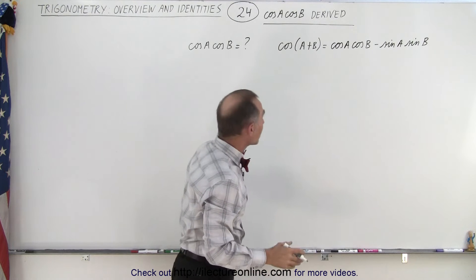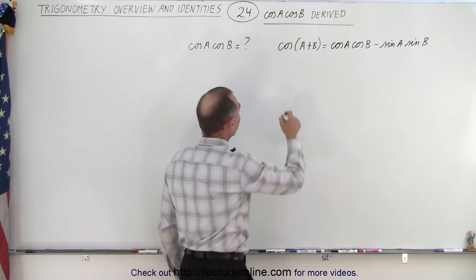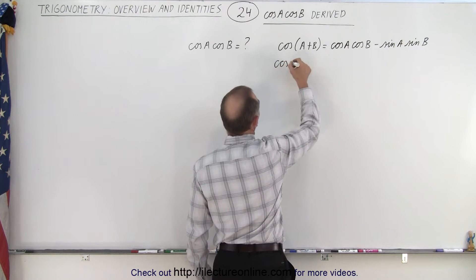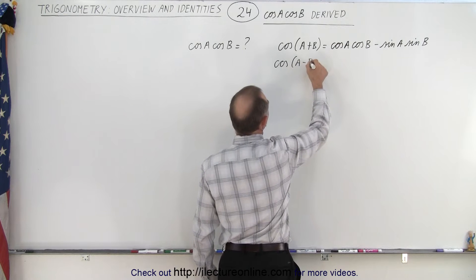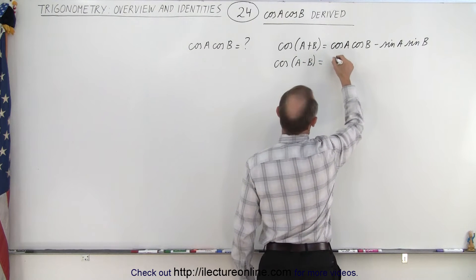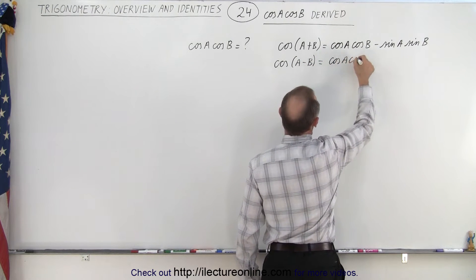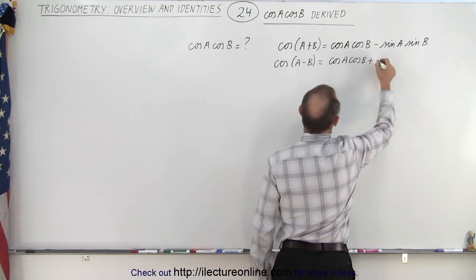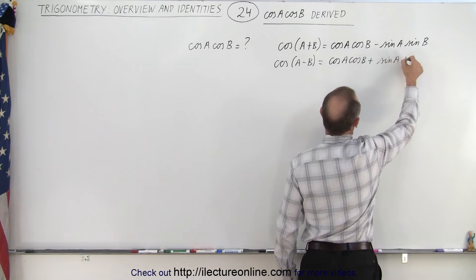Then we write the cosine of the difference of two angles. So here we get the cosine of A minus B, and that will be cosine A cosine B plus sine A sine B.